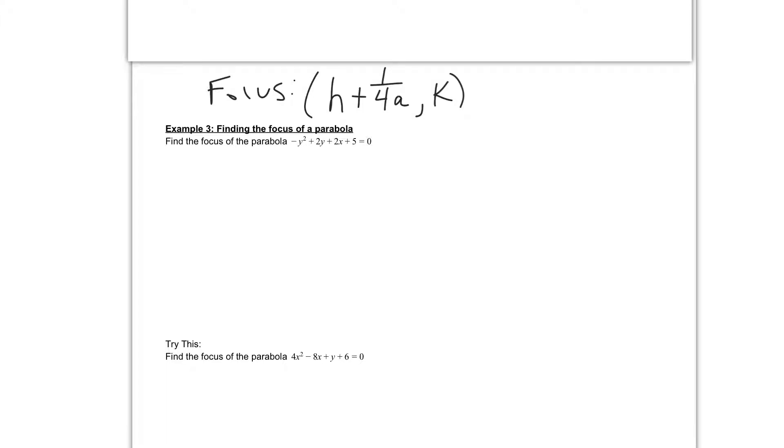To do that, I need my x by itself. So if I want to get my x by itself, I'm going to add the y squared, subtract the 2y, and subtract the 5 to move it over to the other side. And I get 2x equal to y squared minus 2y minus 5.